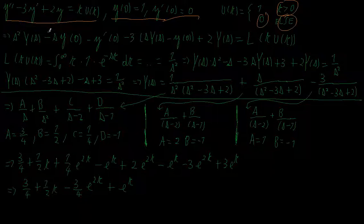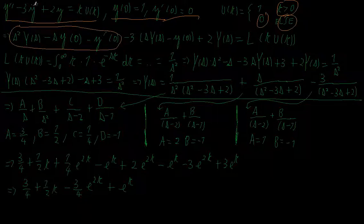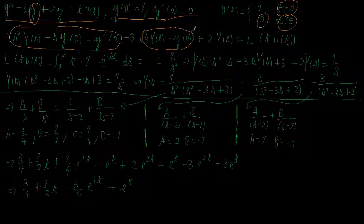If I take the Laplace transform of both sides, I get s squared times Y(s) minus s times y(0) minus y'(0) — that is my y'' term — minus 3 times the Laplace transform of y', which is s times Y(s) minus y(0), so minus 3 times (s·Y(s) minus y(0)), plus 2 times Y(s), equal to the Laplace transform of t times u(t).